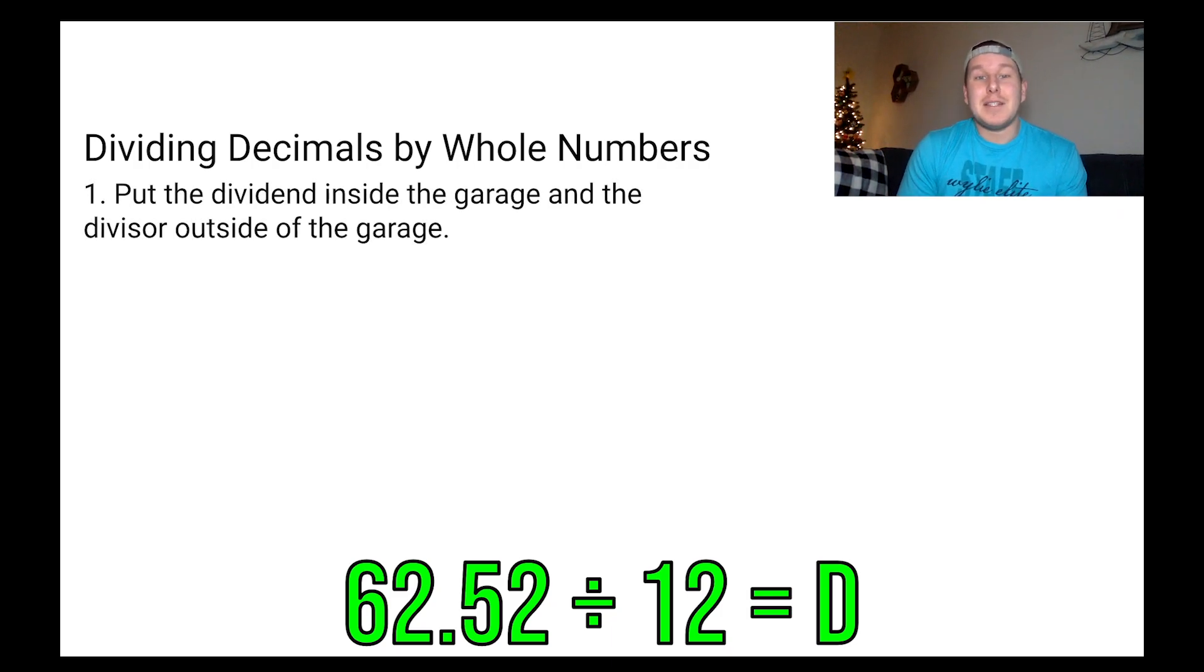Step one, put the dividend inside the garage and the divisor on the outside of the garage. Just a reminder, the dividend is the first number in a division problem, the divisor is the second number and the quotient is the answer to our division problem. So we're all familiar with this symbol. We've got the dividend on the inside and the divisor on the outside.